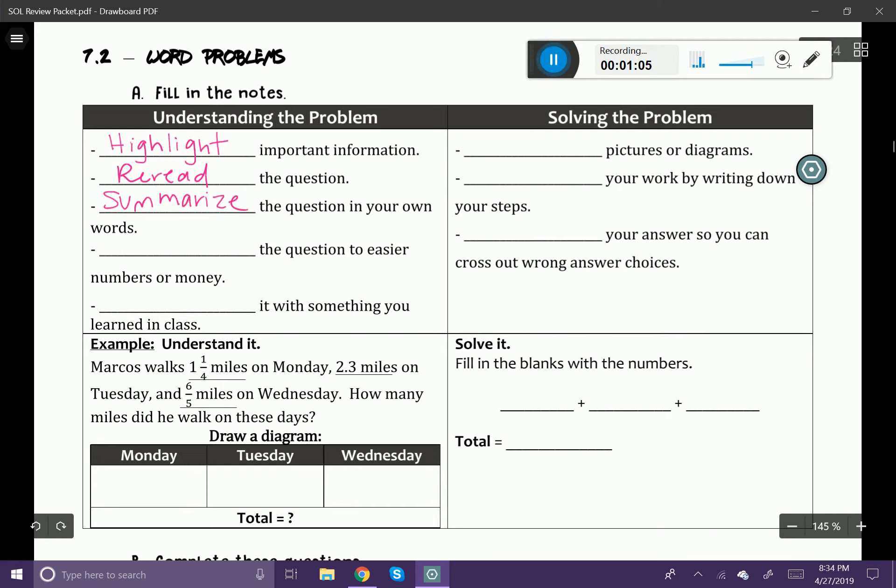And then the second to last tip, we want to convert the question to easier numbers or money. So always take numbers and try to convert them into more simpler terms. Okay, now the last tip. Connect it with something that you learned in class. So try to connect it with another topic that you maybe have learned about in previous lessons.